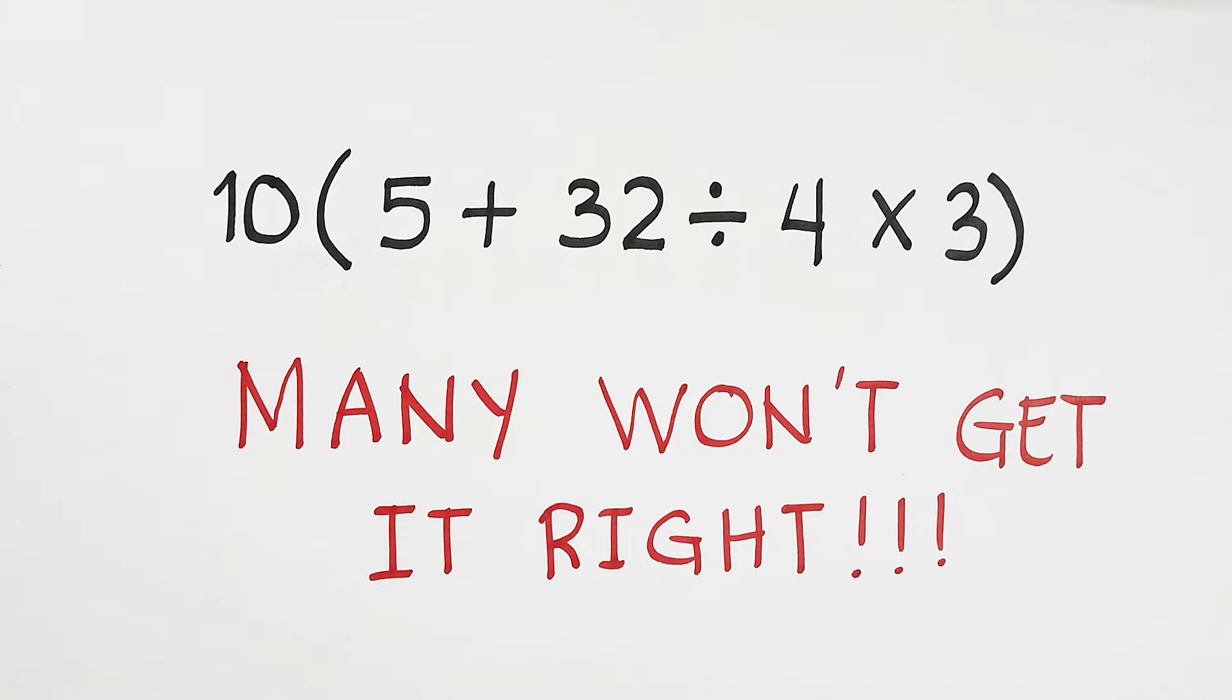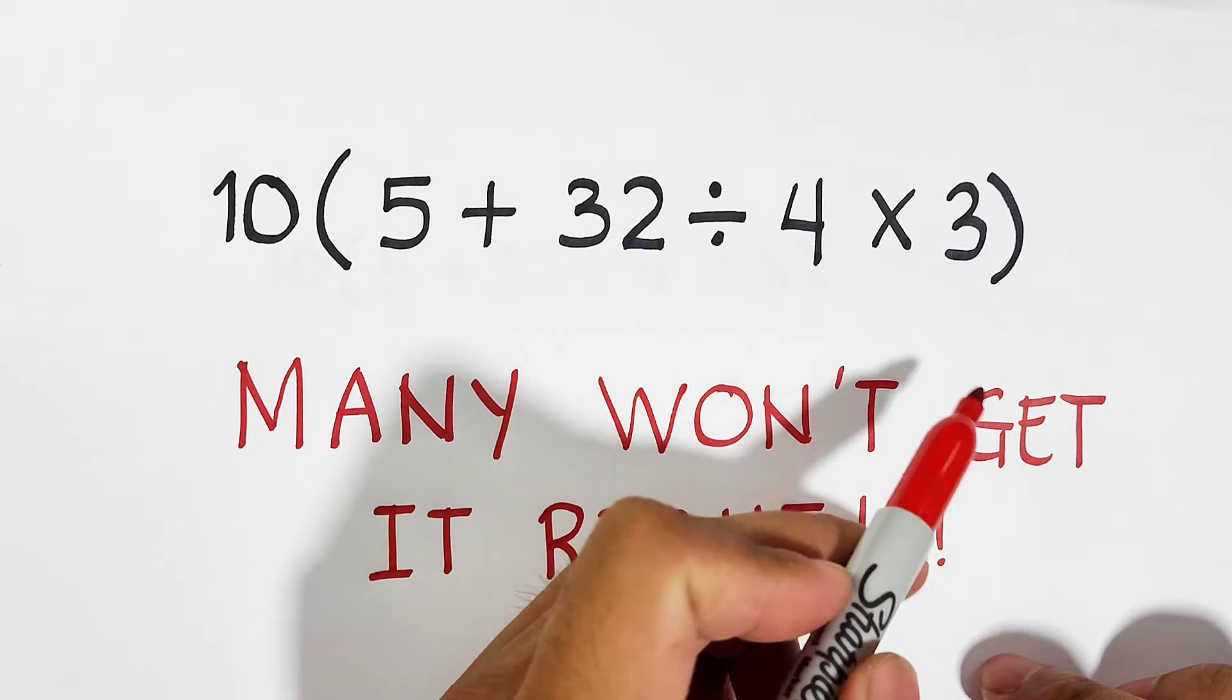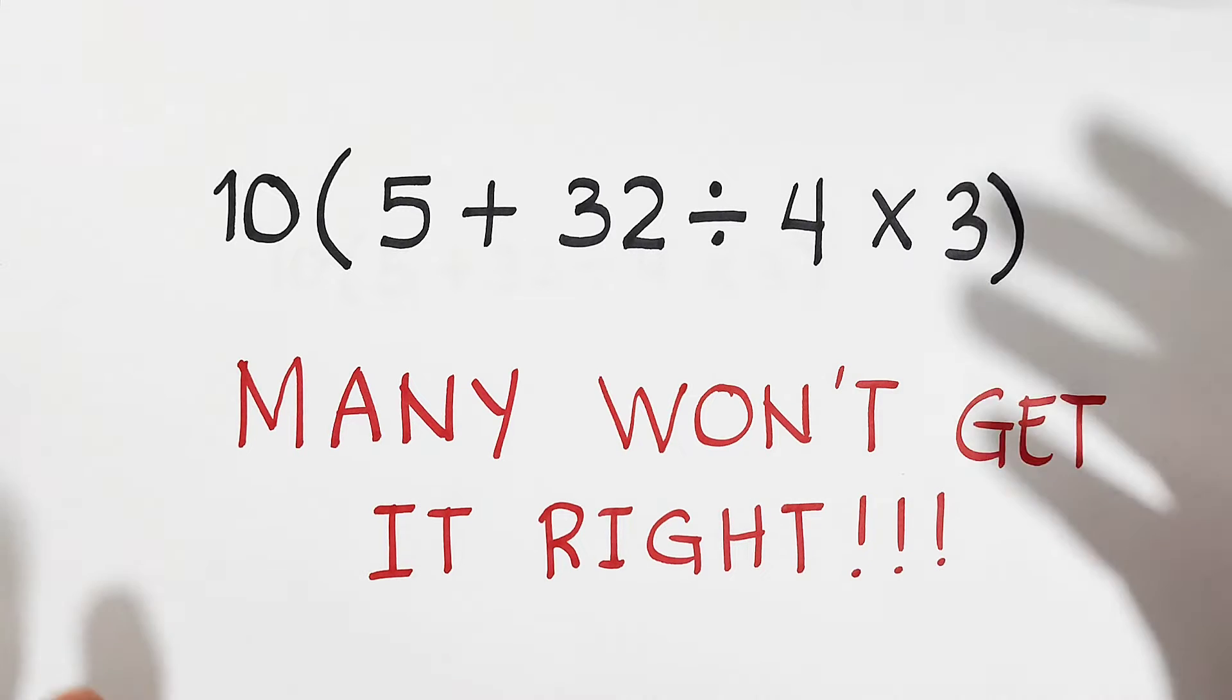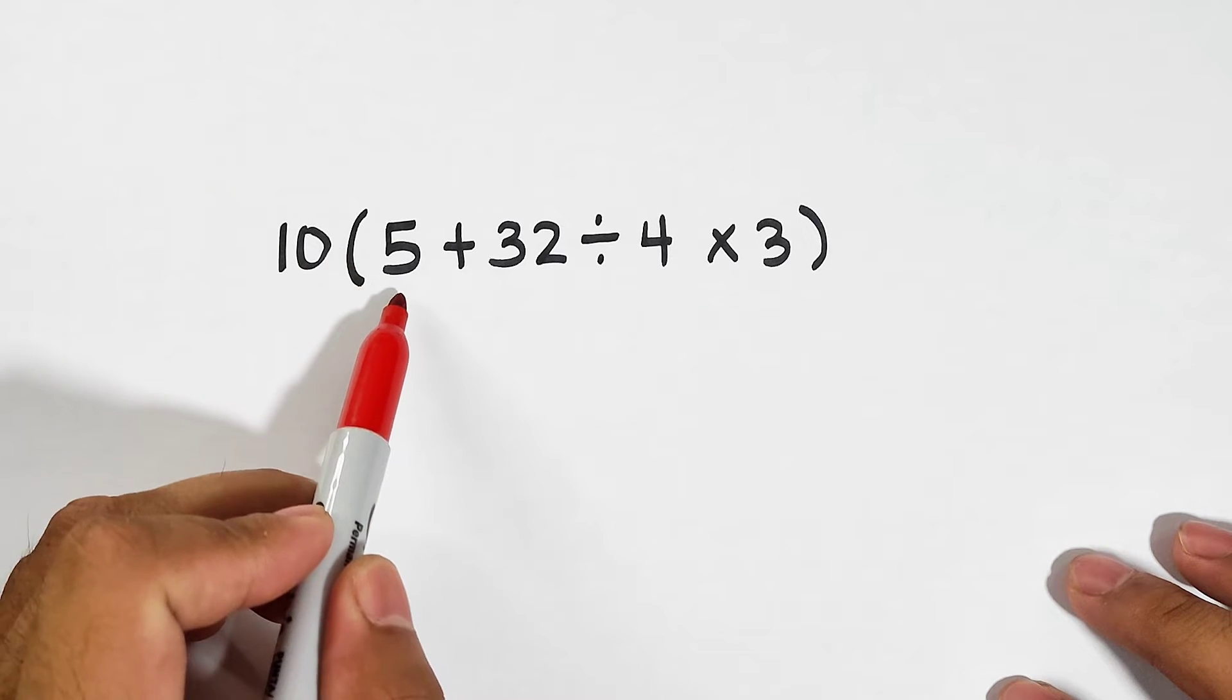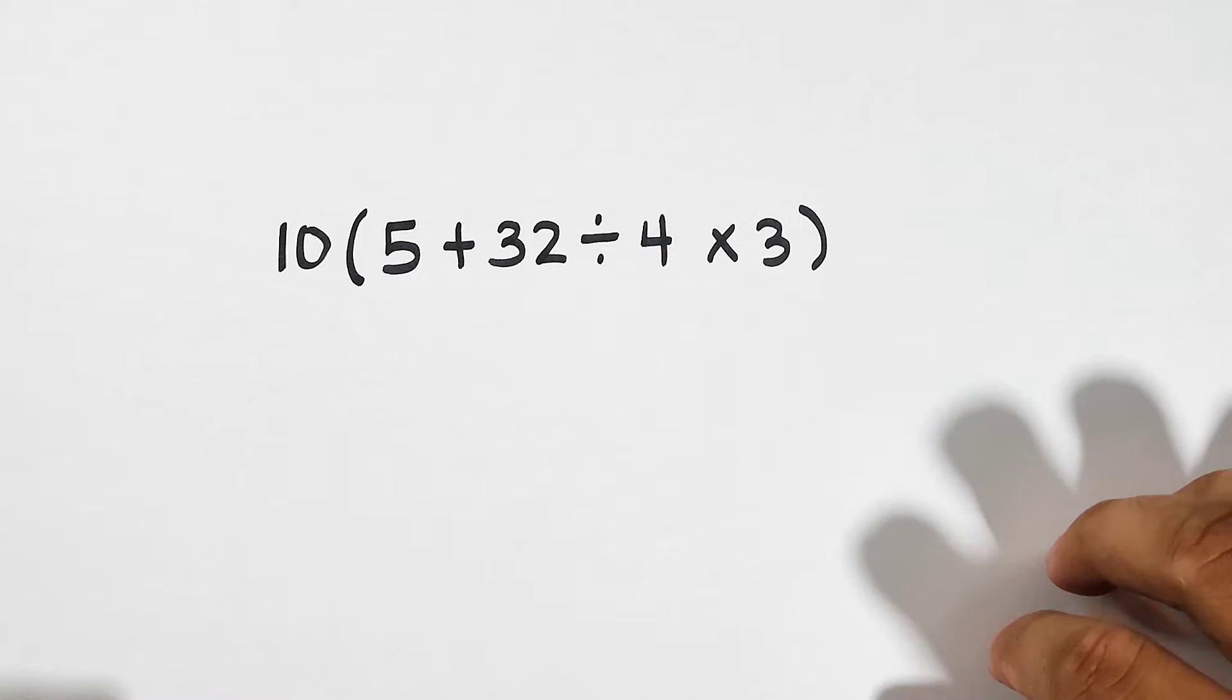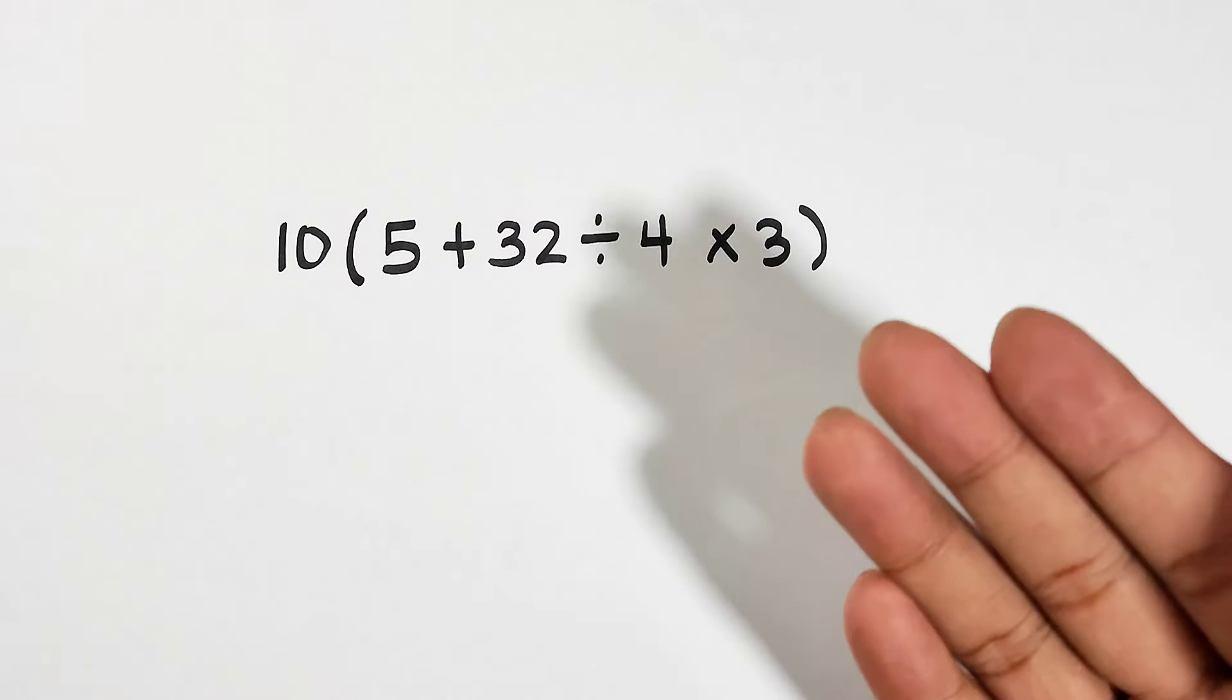Hi guys, it's me Teacher Gone. In today's video we will talk about the order of operations, and for sure many won't get it right. So let's talk about this given expression. What we have here is 10 times (5 plus 32 divided by 4 times 3).